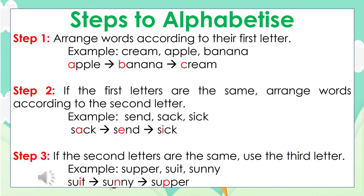Now let's look at the steps to alphabetize a list. Step number one: arrange the words according to their first letter. For example, we have the words cream, apple, and banana. We simply follow the ABC order, so we get apple, banana, and cream.